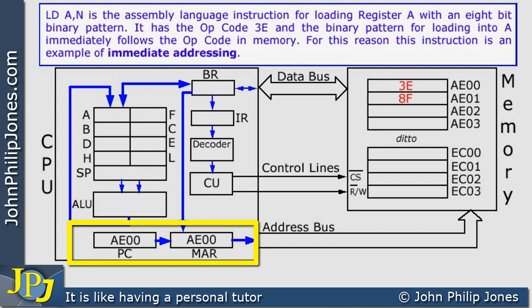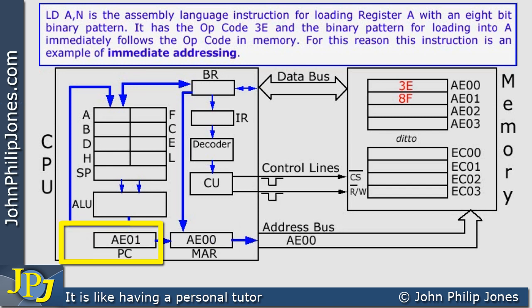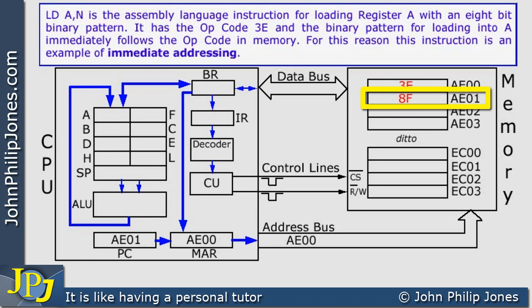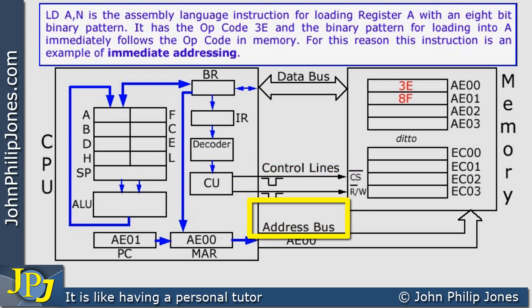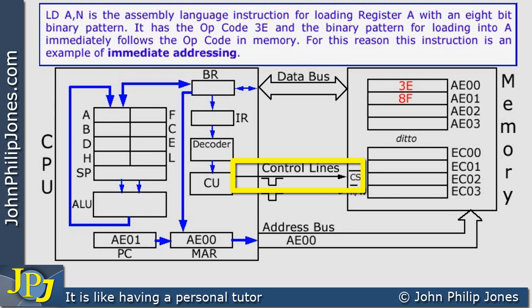The first step of execution is the copying of the content of the program counter to the memory address register. The next step is for the program counter to have its contents incremented by one, so that it is ready to point to the next memory location. The microprocessor system control unit then arranges for two pulses to leave for the computer's memory, while placing the pattern from the memory address register onto the address bus.